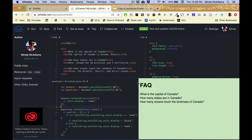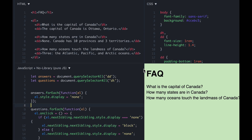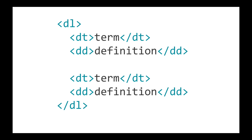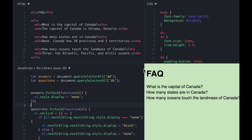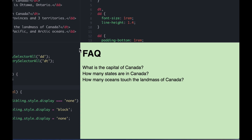We could demonstrate this with several buttons and several divs, but instead I'm going to use a definition list. This is the normal structure of a definition list. It was designed to hold terms and definitions like a glossary, but it's also a really good element for an FAQ, because you can use the DT element for the question and the DD element for the answer. So I've made a simple FAQ with three questions and answers about Canada.